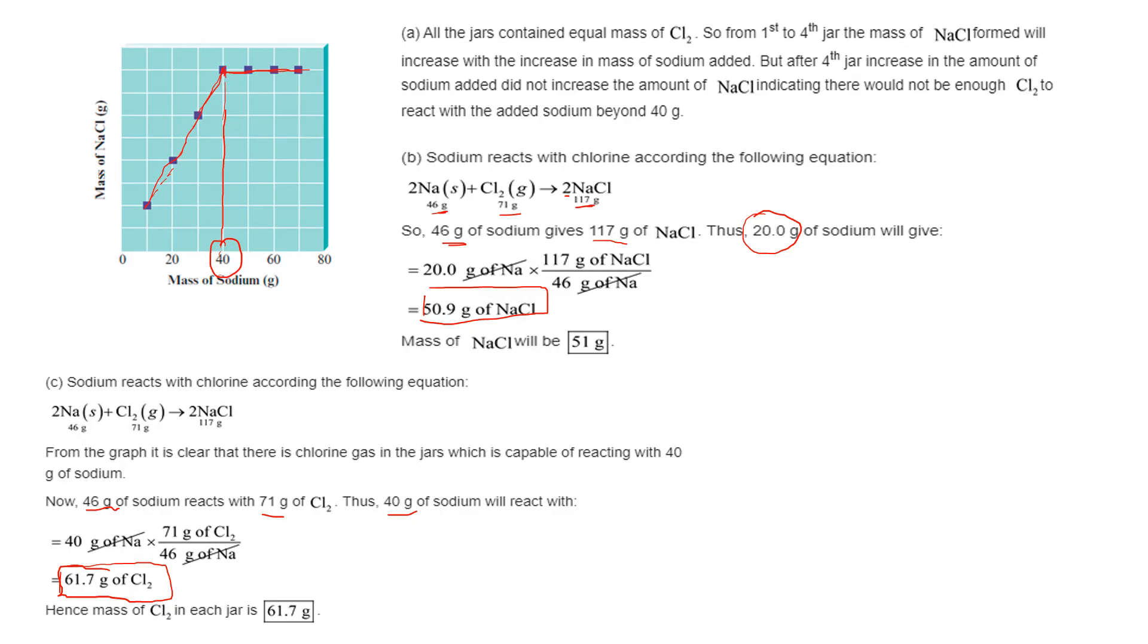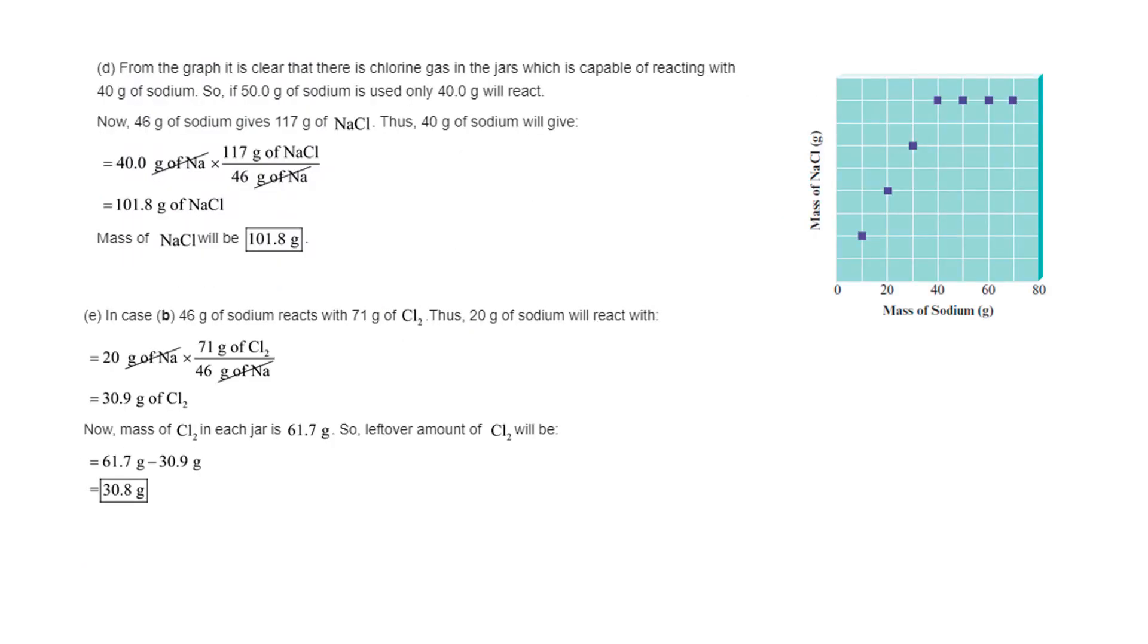Again, another ratio of proportion to get the mass of NaCl. We got 46 from the equation, it's giving you 117, so what will 40 grams of sodium give you? The mass of NaCl is going to be that.